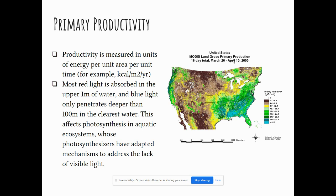Think about why that might be happening. In the central part of the United States, it tends to be a lot colder between March 26th and April 10th, and many of these areas might still be covered in snow. So they have very low primary productivity because there is not a lot of plant life growing during that time of year. That's why we see higher productivity in California and in the south — Florida, Louisiana, and similar states — which tend to have more mild winters.